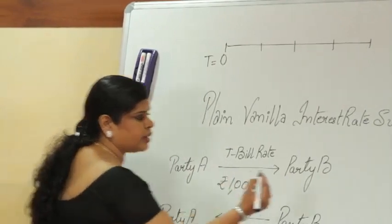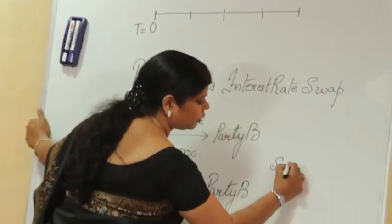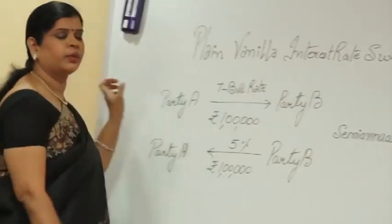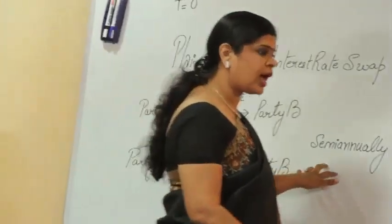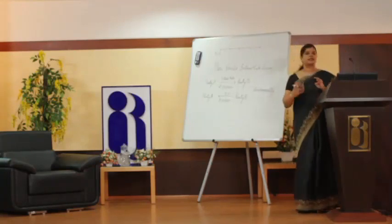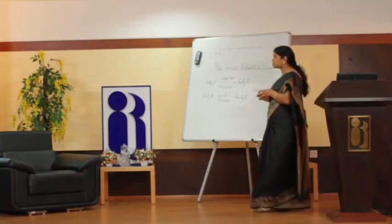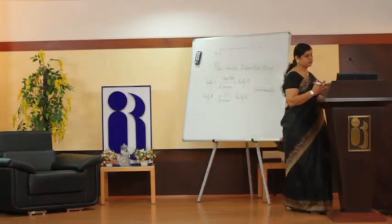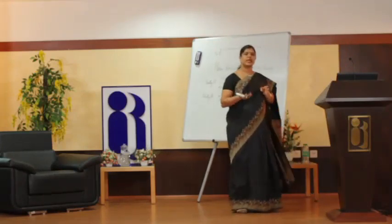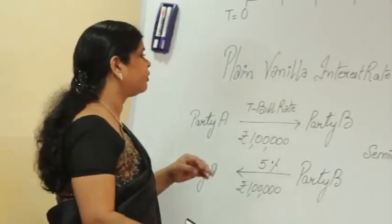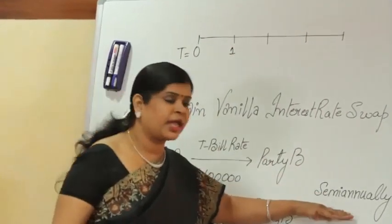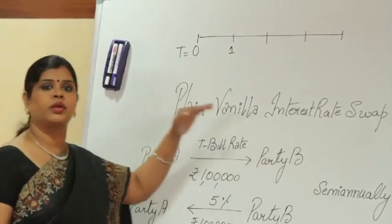Let us take it as semi-annually — the interest rates are swapped semi-annually. Party A is going to pay to party B at the T-bill rate. The current T-bill rate is 5%, for the first settlement date it is 6%, and for the second settlement date it is 7%. Since coupon payments are done on a semi-annual basis, we need to de-annualize the coupon rates.